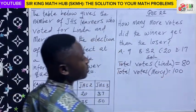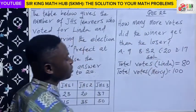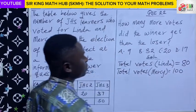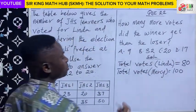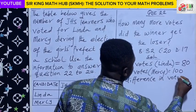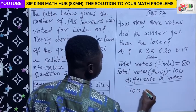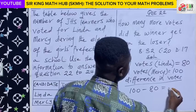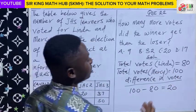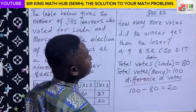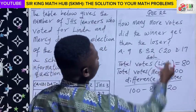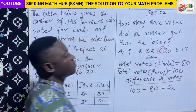So obviously, Mercy is the winner. How many more votes did the winner get than the loser? Mercy got 100 votes and the loser, Linda, had 80 votes. The difference is 100 minus 80, which gives us 20. So Mercy got 20 more votes than Linda. The correct answer from the alternatives is C.